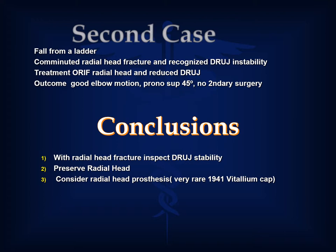Based on these two cases, he concluded: one, with a radial head fracture, it was important to identify distal radial ulnar joint instability; two, if such instability was found, one should preserve the radial head; three, if the radial head could not be preserved, then one should consider the use of a radial head prosthesis. Such prostheses were even rarer at the time, with a vitallium cap having been just developed by Speed in 1941.